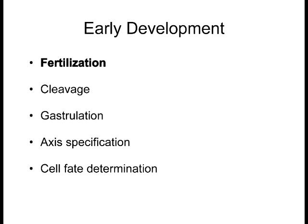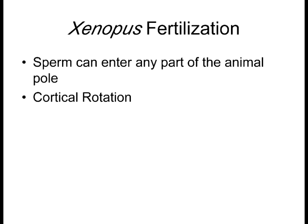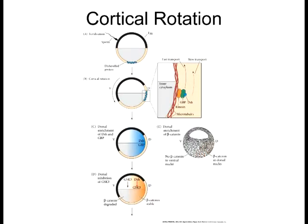I'm going to go through each model organism and talk about fertilization and some of its key events. Let's start with Xenopus. The frog oocyte is set up so that the sperm can only enter through the animal pole — it cannot penetrate the vegetal pole where the high concentration of yolk is. It can enter anywhere along the animal hemisphere. Cortical rotation is a huge thing in terms of axis specification and initial patterning of the embryo.